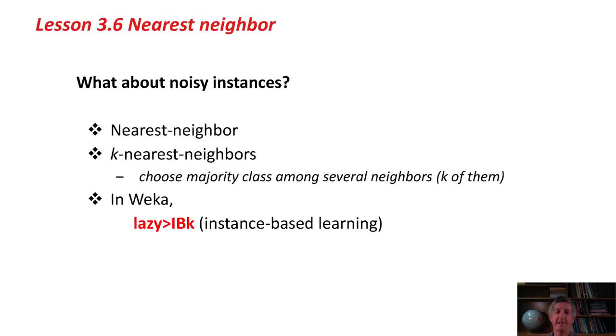What about noisy instances? If we have a noisy data set, then by accident we might find an incorrectly classified training instance as the nearest one to our test instance. You can guard against that by using k nearest neighbors, say 3. k might be 3 or 5, and you look for the 3 or the 5 nearest neighbors and choose the majority class amongst those when classifying an unknown point. That's the k-nearest-neighbor method. In WEKA, it's called IBK, instance-based learning with parameter k, and it's in a lazy class.